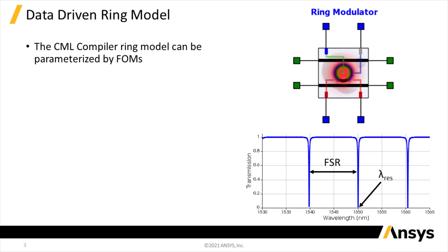When using the CML compiler's ring modulator model, users can either specify physical parameters like effective index and ring radius, or figures of merit like resonant wavelength and free spectral range. If figures of merit are used, the CML compiler will automatically adjust the internal parameters to match the specified figure of merit values.